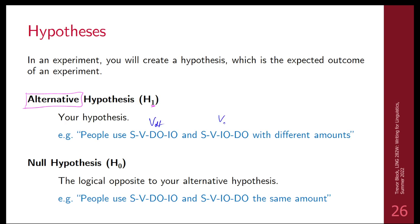The null hypothesis is the hypothesis contrary to your hypothesis — it assumes similarity, basically the opposite of your alternative hypothesis. So the null hypothesis in this case would be that people use SVDOIO and SVIODO the same amount. Our alternative hypothesis says structure one is not equal to structure two, and the null hypothesis says they're basically the same. In statistics, we're not really trying to prove our hypothesis — we're trying to disprove the null hypothesis, to show it's so unlikely that these are not different that they therefore must be different.